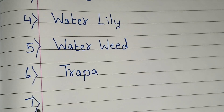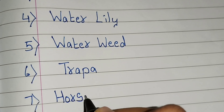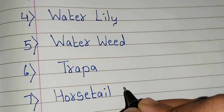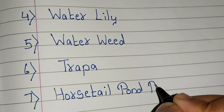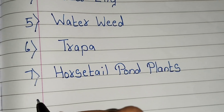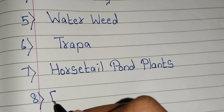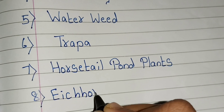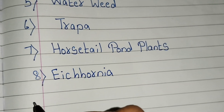Seventh, horse tail pond plants. Eighth, eichornia — E-I-C-H-O-R-N-I-A. Eichornia.